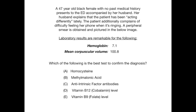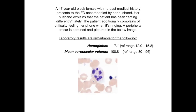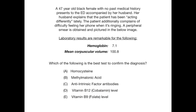Pause the video if you'd like more time to think about this, and rewind a little bit if you want to see the image. Here's the image of the peripheral smear that was obtained. To summarize quickly: 47-year-old female acting differently, complaining of difficulty feeling her phone when it's ringing. Peripheral smear shows the picture here, hemoglobin is 7.1, mean corpuscular volume 100.8. The question asks which is the best test to confirm the diagnosis.